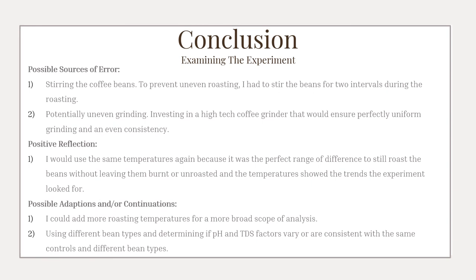Some possible adaptations: in the future, I could add even more roasting temperatures and try for a broader scope. I could also use different bean types, or see what effect different bean flavors have on the pH and total dissolved solids, or if they're consistent with the experiment this time.